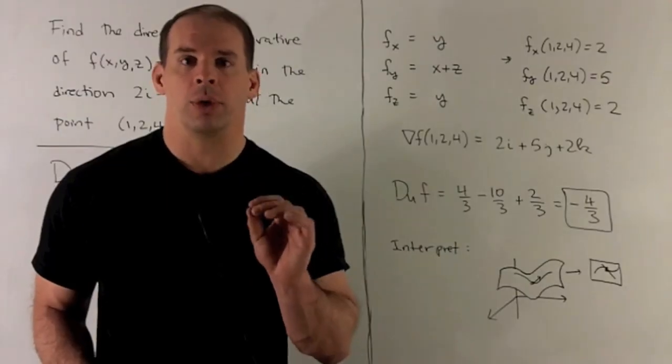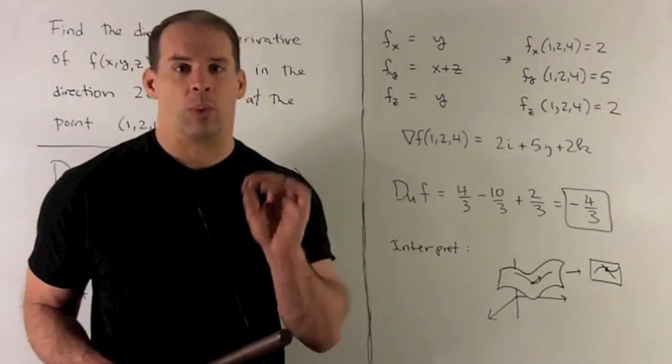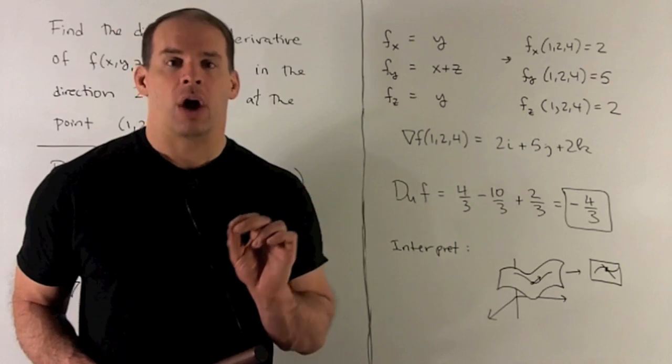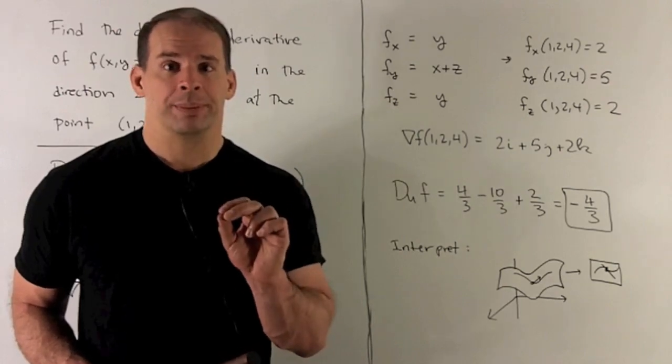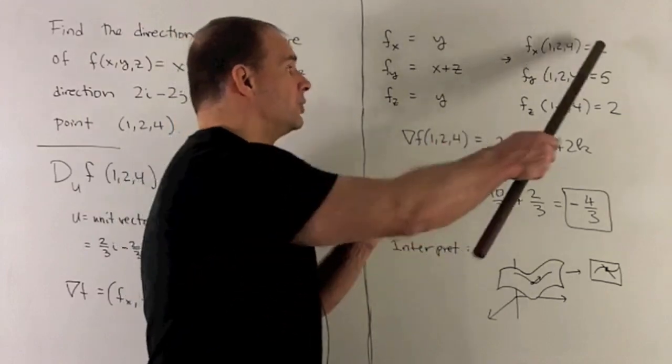We work through the partials. The partial with respect to x is going to be y. We treat x as the variable, y and z are constants. I put our point in, so we're going to put in a 2, 2 comes out.